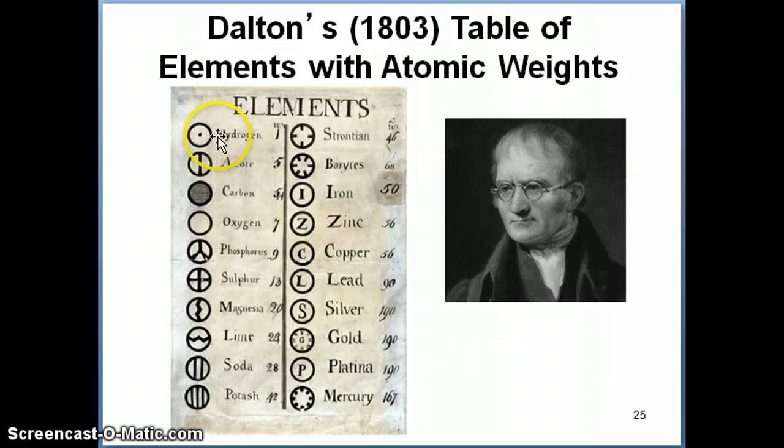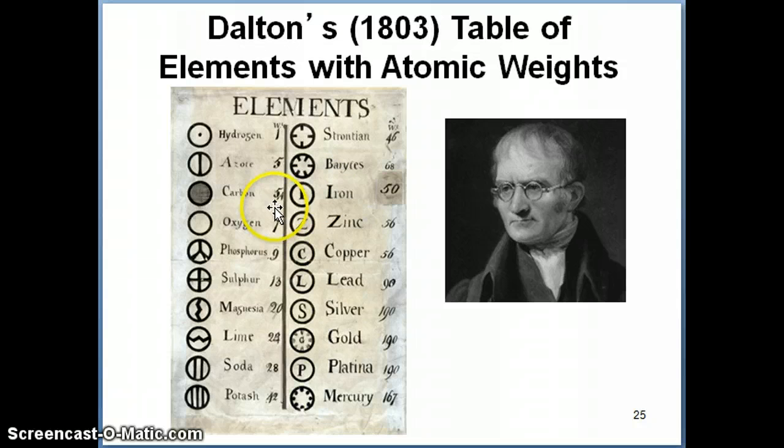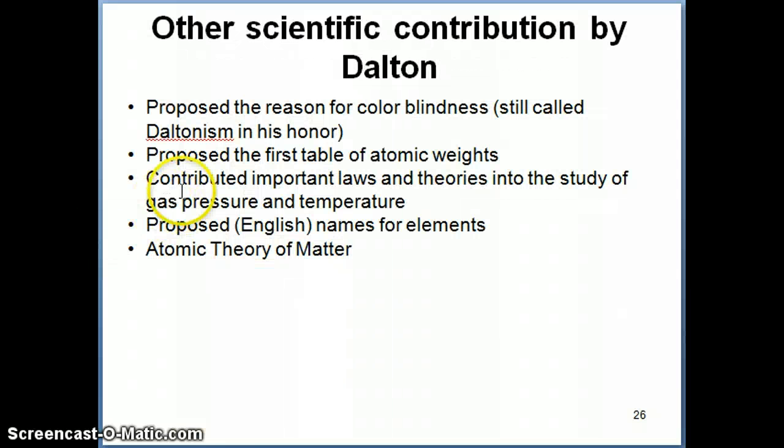Dalton then proposed certain atomic weights for each of these elements that were known at the time when he was alive. And using that, he was then starting to make certain assumptions about formulas of chemicals that were known at the time: water, copper oxide, and so on. So he was able to do this, and not only that, he also had other contributions, just like Lavoisier had many contributions to chemistry.